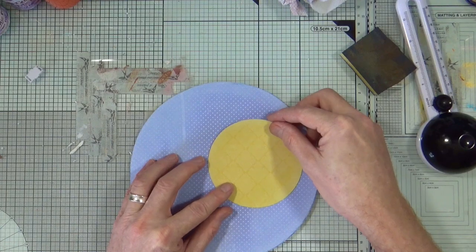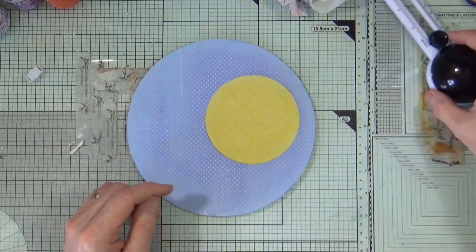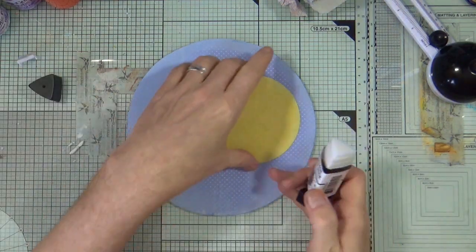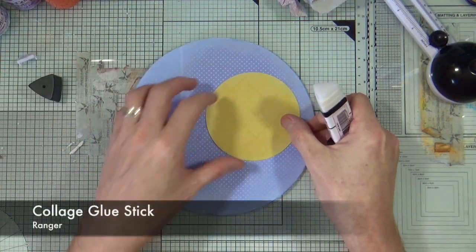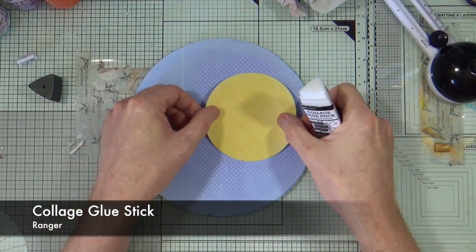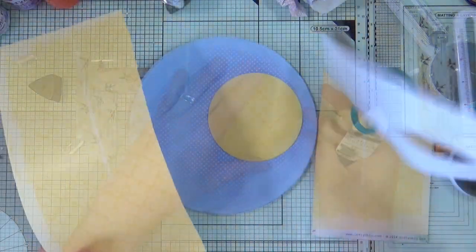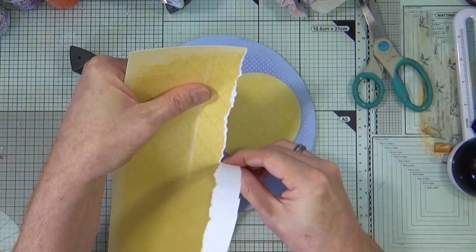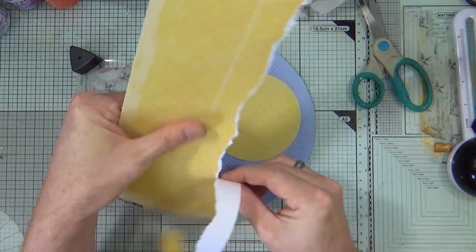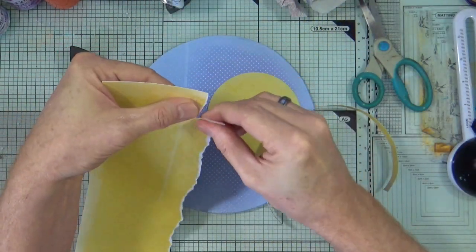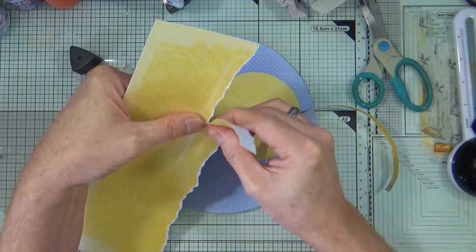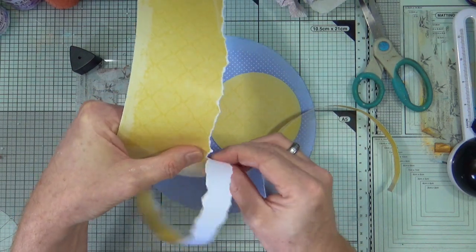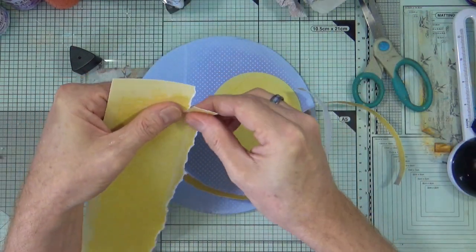I'm just going to position the sun onto my backing paper just so I can gauge where it's going to go. Then using the collage glue stick, I'm just going to put a small amount, just a little dab in the middle to hold it in place while I work around it. Next I'm going to take some of that excess yellow paper and start tearing some strips, just thin strips all the way down. I'm going to use these thin strips to create some kind of sun rays or a sunburst behind the circle.